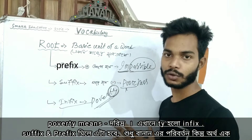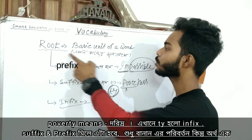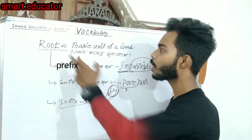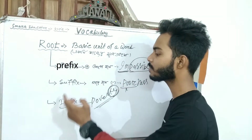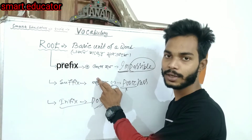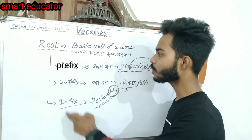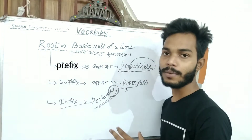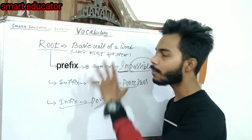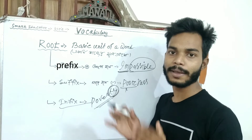So to summarize: the root means the basic unit of a word. The prefix is added before the root, and the suffix is added after it. Understanding these will help you build vocabulary effectively.